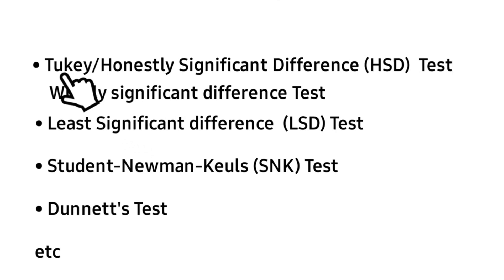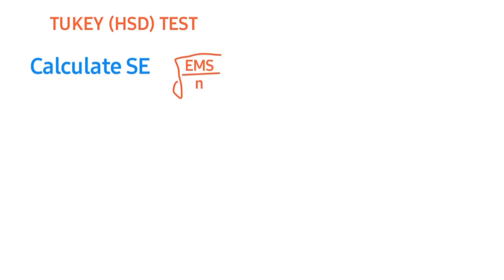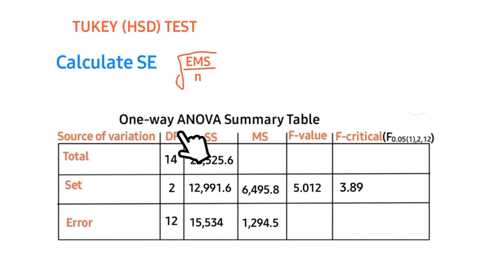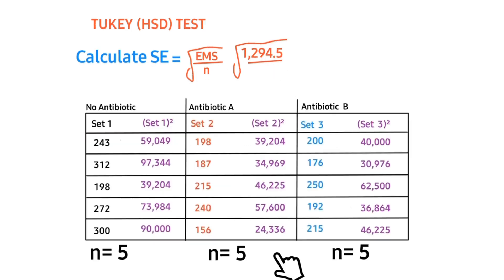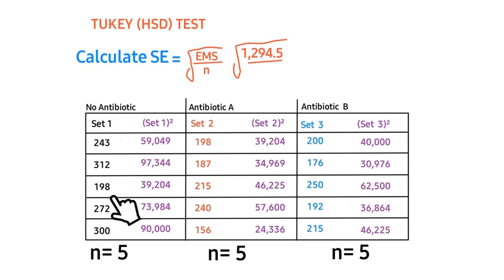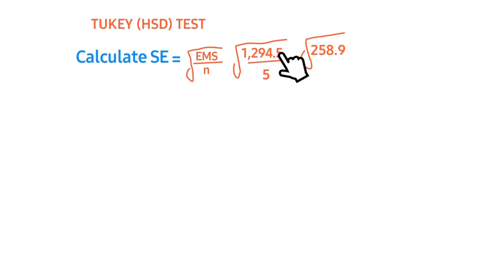For the purpose of this video, we're going to work with the HSD test. The first thing is to calculate standard error. The formula is: square root of (Mean Square Error divided by n). From our one-way ANOVA summary table in the previous video, we get our Mean Square Error value. Our n value is 5 for each group, as each group has five observations. Dividing gives 258.9, and the square root of 258.9 is 16.09.